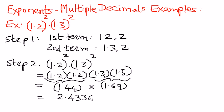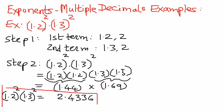So when we had this problem — 1.2 raised to the power of 2 times 1.3 raised to the power of 2 — we got an answer of 2.4336. Let us recap. We had exponents in multiple decimal formats. In step number 1, we identified the base term and the exponential term for both the first and second term. In step number 2, we applied the concept: the number of times the base term needs to be repeated is given in the exponential term. We expanded the terms, simplified the math, and got the answer.